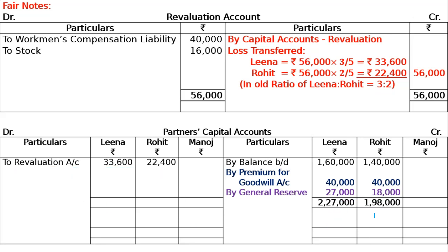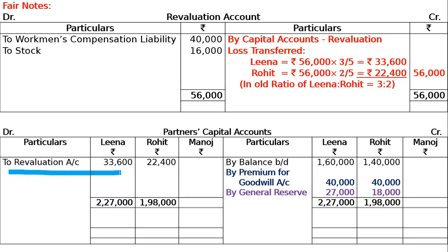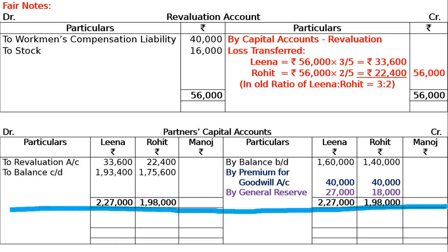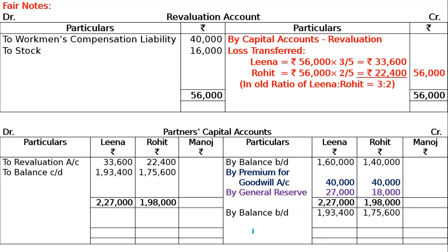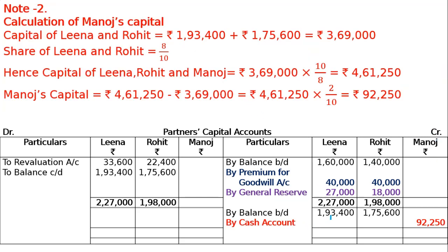Total both sides of the capital accounts. Bring down the balance. Then, Manoj will bring in proportionate capital. Go for the capital adjustment — total both partners' capital balances after adjustments. The combined capital comes to 3,69,000.